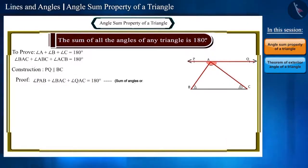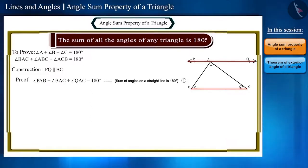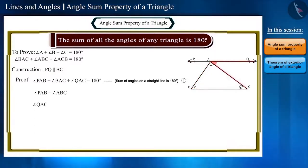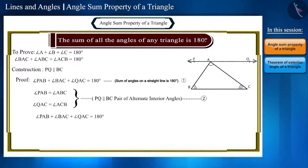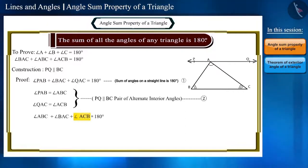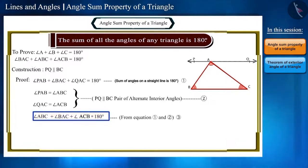Because line PQ and line segment BC are parallel, we will use the properties of a transversal. Therefore angle PAB is equal to angle ABC, and angle QAC is equal to angle ACB, because these are pairs of alternate interior angles — equation two. Now in equation one we can write angle ABC instead of angle PAB and angle ACB instead of angle QAC. So equation one becomes: angle ABC plus angle BAC plus angle ACB equals 180 degrees. Thus the theorem is proved.